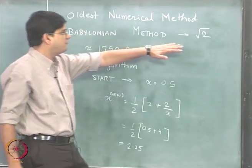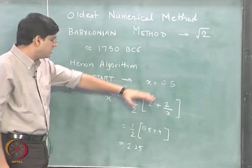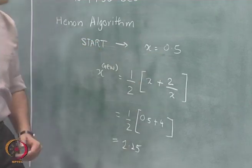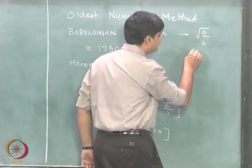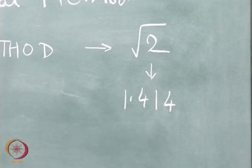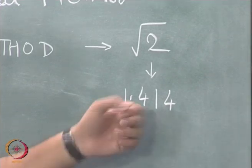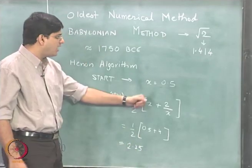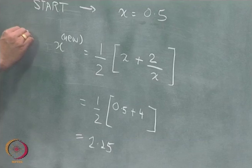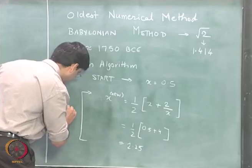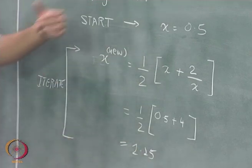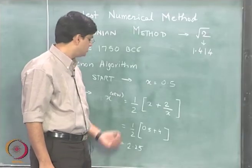Now, remember the solution of the square root of 2 is approximately 1.414. If you look at these values — 0.5 and 2.25 — both of these values are pretty far away from the actual value, which to 3 digits after the decimal is 1.414. Neither of these values are close enough. So what do we do? We take this x_new value and repeat this particular procedure over and over again. We iterate over this particular equation repeatedly until we get the actual solution.